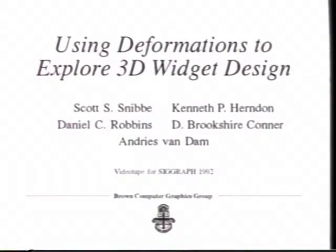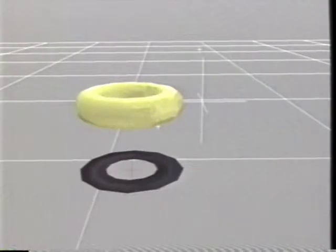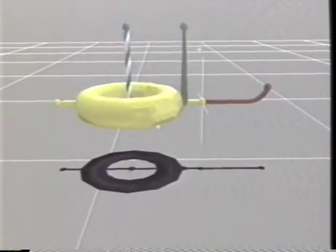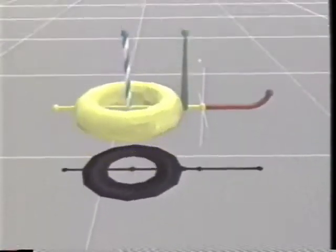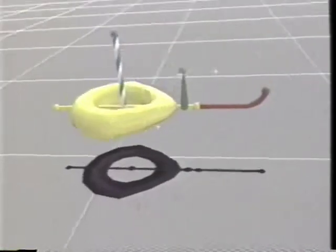By introducing a suggestive visual representation for each of the handles, the rack widget becomes more self-disclosing. For instance, the twisted shape of the twist handle indicates its function.